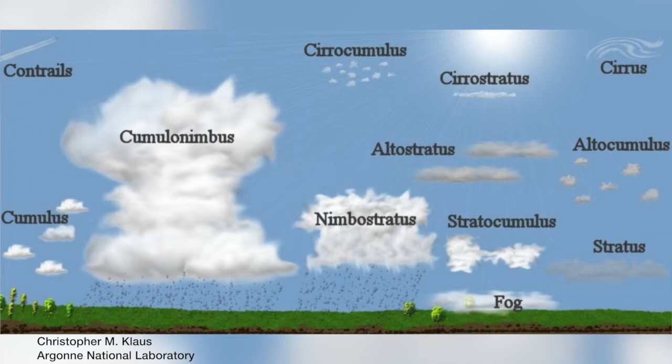Now let's talk about cloud forms. In the study of clouds, called nephology, scientists classify clouds by genera and species, which can be subdivided even further into varieties. There are more than 15 cloud species, 9 varieties, and an assortment of features and accessories that further divide cloud types. But today we're only going to focus on 10 basic cloud types and how to identify them.